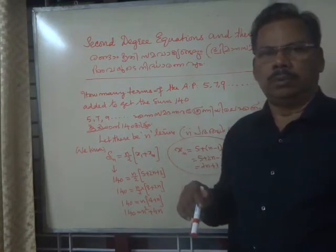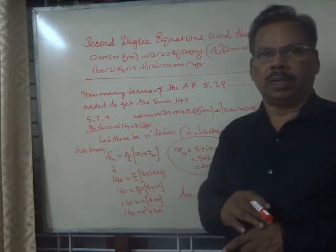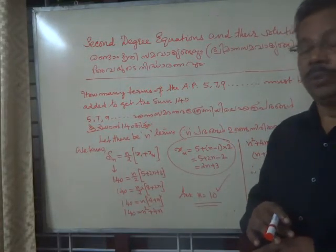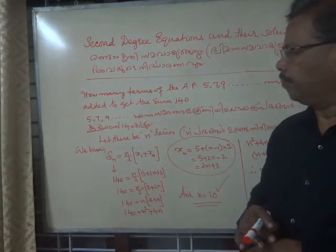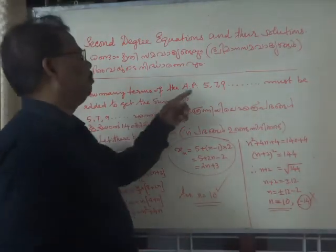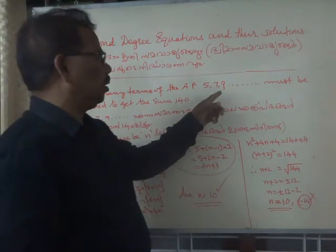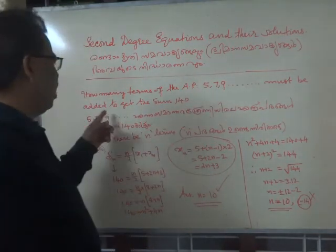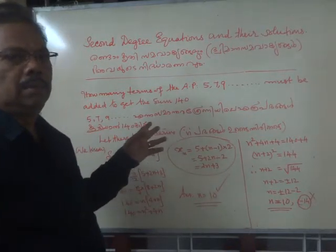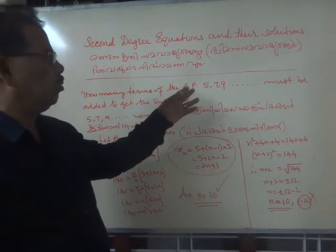How to solve a quadratic equation by the method of completing the square. How many terms of the AP 5, 7, 9, etc. must be added to get the sum 140?